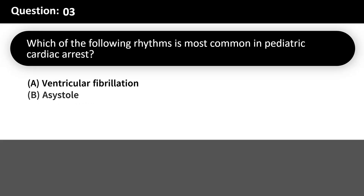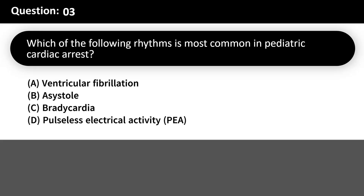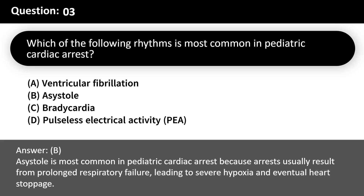Which of the following rhythms is most common in pediatric cardiac arrest? A. Ventricular fibrillation. B. Asystole. C. Bradycardia. D. Pulseless electrical activity (PEA). Answer: B. Asystole is most common in pediatric cardiac arrest because arrests usually result from prolonged respiratory failure, leading to severe hypoxia and eventual heart stoppage.